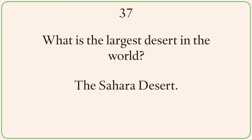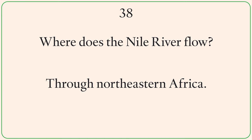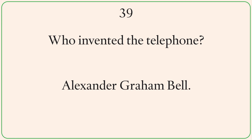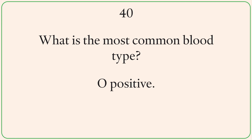What is the largest desert in the world? The Sahara Desert. Where does the Nile River flow? Through northeastern Africa. Who invented the telephone? Alexander Graham Bell. What is the most common blood type? O positive.